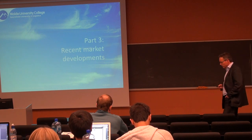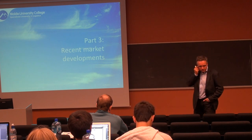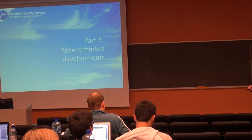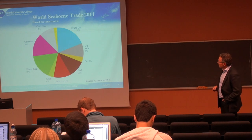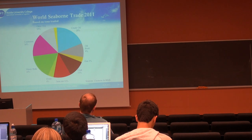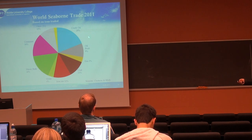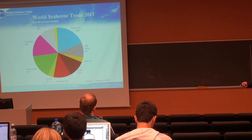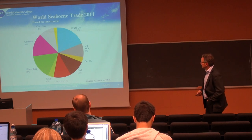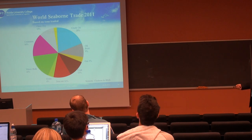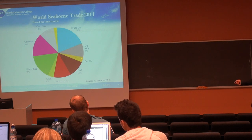Now switching to some figures of recent market developments. Looking at world seaborne trade from 2011 figures, oil products and crude oil account for more than a quarter of the trade — along with gas, this is the wet bulk market. The dry bulk market includes coal, iron ore with roughly equal market shares, grain, and minor bulks covering a range of commodities such as rock materials and intermediate industrial products. Overall, the dry bulk market is slightly bigger than the wet bulk.